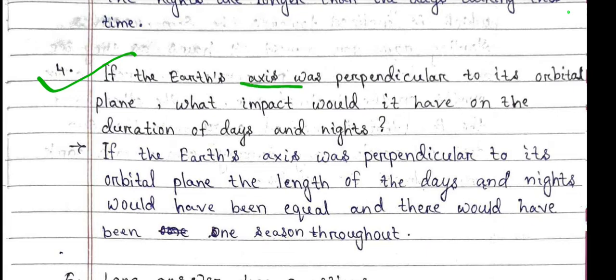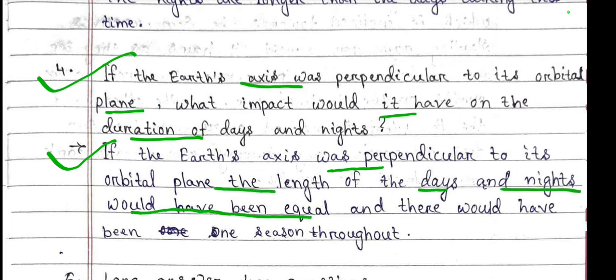Question number 4: If the Earth's axis was perpendicular to its orbital plane, what impact would it have on the duration of days and nights? If the Earth's axis was perpendicular to its orbital plane, the length of days and nights would be equal and there would be one season throughout.